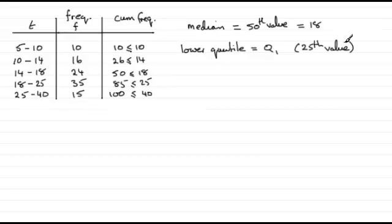So where does that 25th value, where is it, what class is it in? Well, the 25th value is going to be in the interval 10 to 14, this one here. And what I would do is I would draw that class interval going from 10 to 14. We know that we've got 26 values which are less than the upper bound here, 26. And we know that the number of values less than 10 are going to be 10.